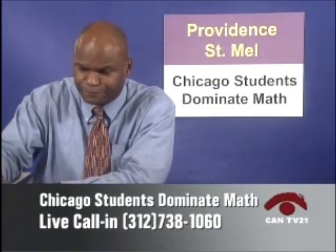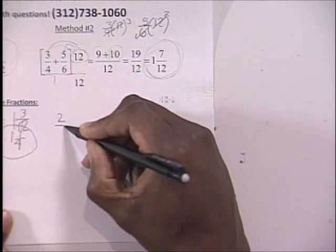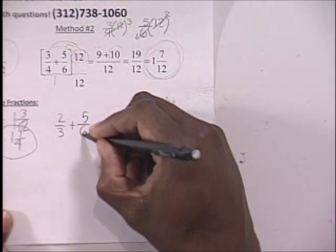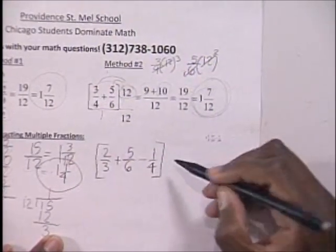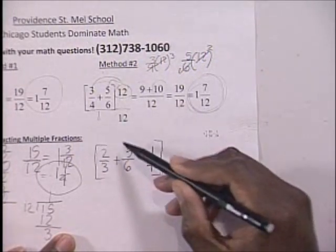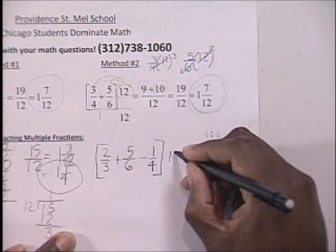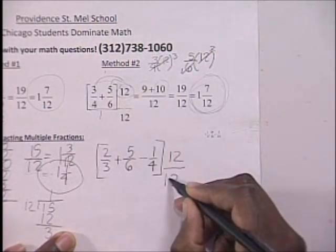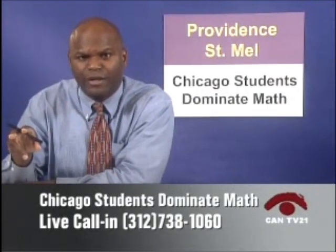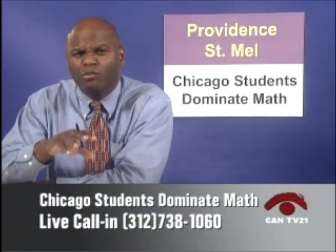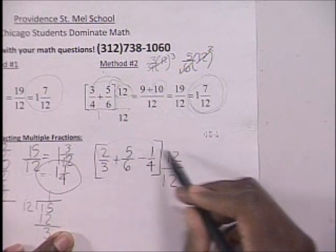Let's look at this same problem using a different technique: 2 thirds plus 5 sixths minus 1 fourth. The technique asks you to multiply the entire expression by 1, and another way of saying 1 is 12 over 12. Remember: anytime you multiply by 1, you don't change the original number. So we multiply our expression by 12 over 12.